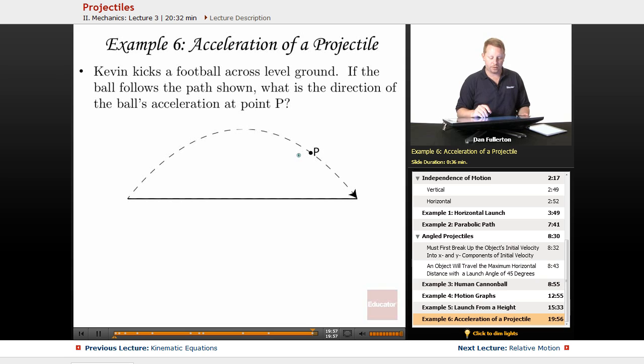Kevin kicks a football across level ground. If the ball follows the path shown, what is the direction of the ball's acceleration at point p? Well, here at point p, or any time along this path, it's in projectile motion. The only force acting on it, the only acceleration, is the acceleration due to gravity near the surface of the earth, 9.8 meters per second squared down. That's all there is to it.